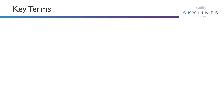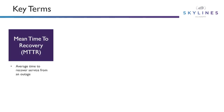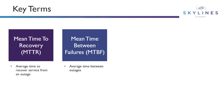Some key terms you need to understand when thinking about availability and SLAs are as follows. One, the mean time to recovery, also known as MTTR — this is the average time to recover the service from an outage. So when you have an outage, how long is it going to take to get that service back online? In addition, we have mean time between failures — how long does a business expect to go between various outages? This is the average time between those outages.